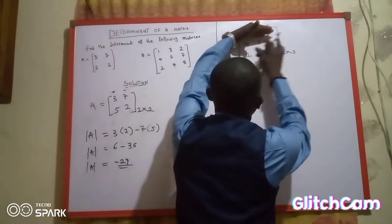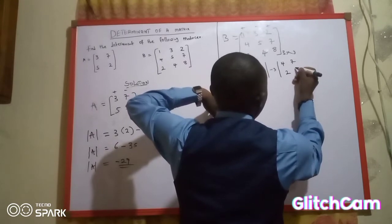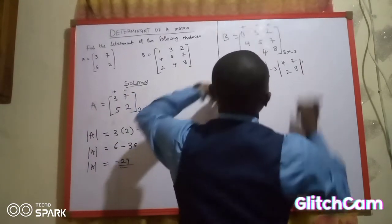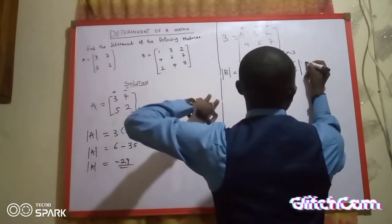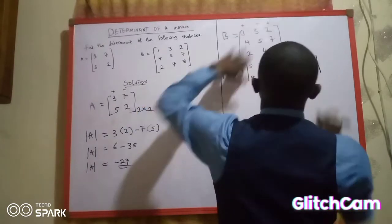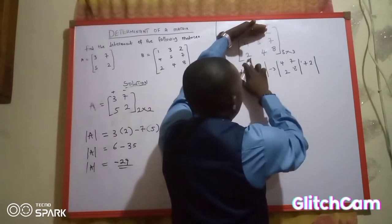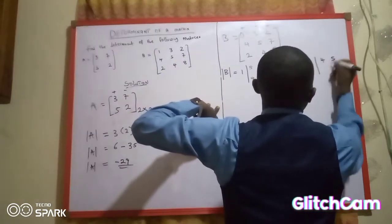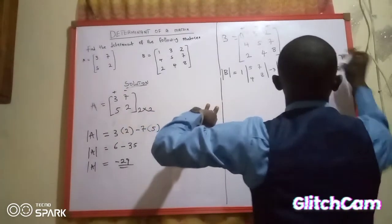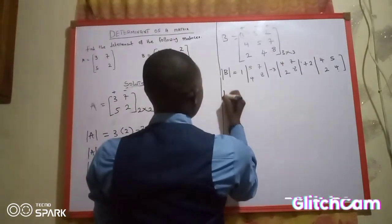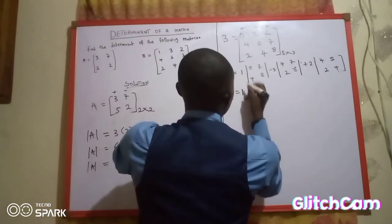We cover the row and column of 3, and we are left with 4, 7, 2, and 8. Close the bracket. Then the last element is 2, which is positive — plus 2. Open bracket, cover the row and column of 2, and we are left with 4, 5, 2, and 4.